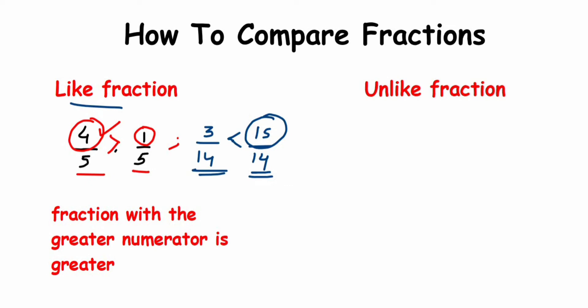For unlike fractions — those with different denominators — we have two cases. In the first case, the denominators are different but the numerators are the same. For example, 1/5 and 1/6: the denominators are 5 and 6, and both numerators are 1. Here, the smaller denominator gives the greater fraction, so 1/5 is greater than 1/6. It's the opposite of like fractions.